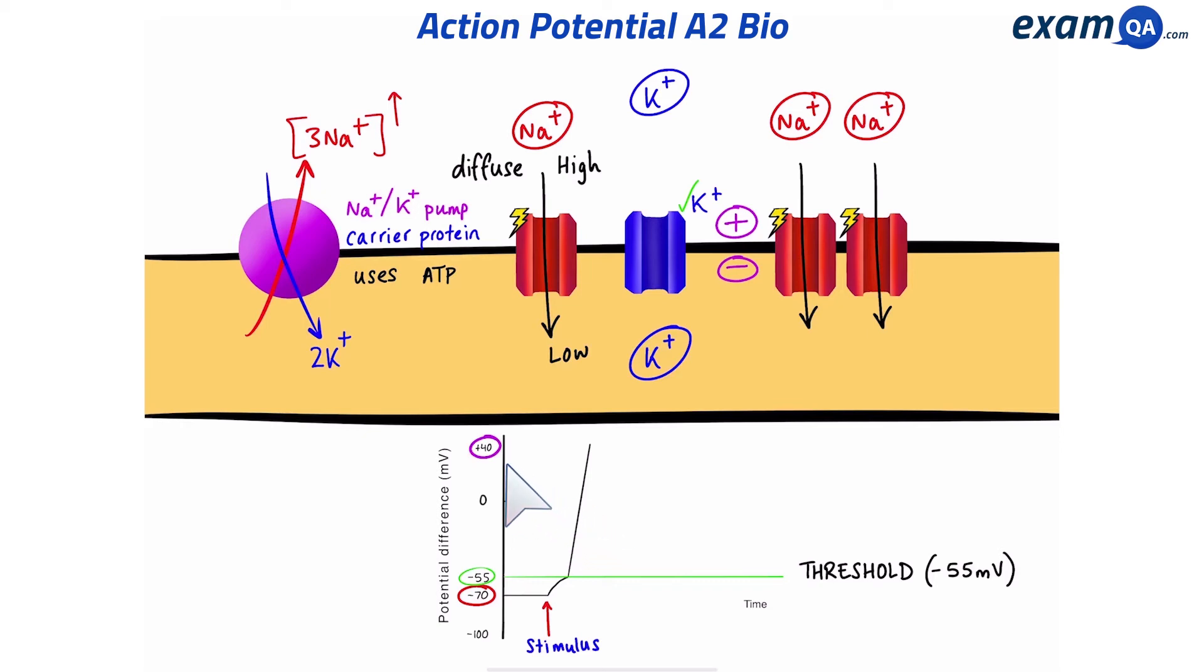We can now see, according to the graph, the inside of the neuron is going to be more positive than the outside. So the poles have swapped. This is also known as depolarization.